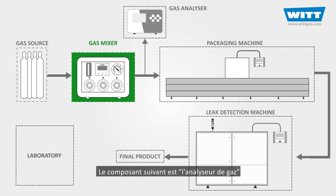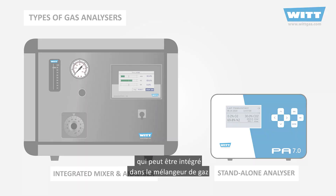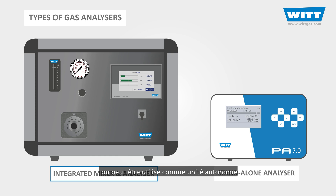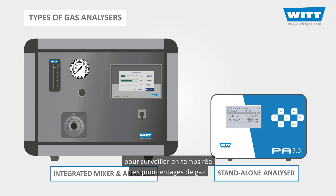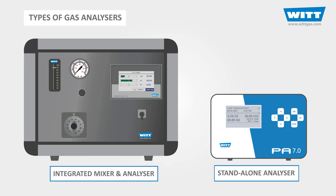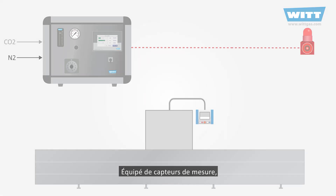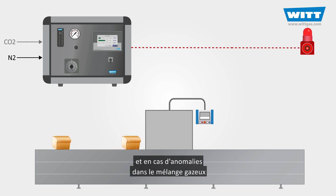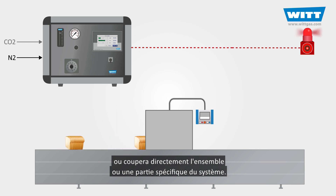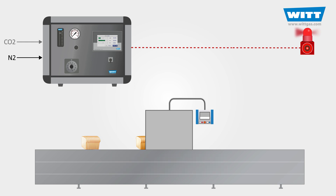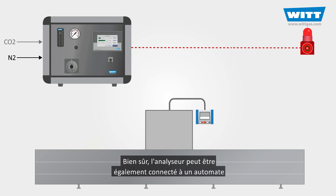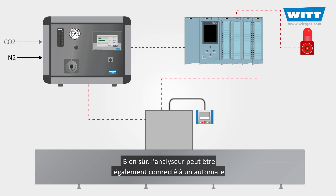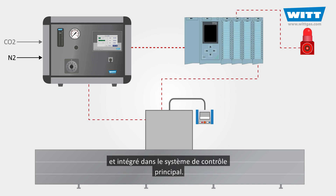The next component is the gas analyzer, which could be integrated into the gas mixer, or could be a standalone unit for monitoring the exact real-time percentages of the gases. Equipped with measurement sensors, the analyzer works in conjunction with the mixer, and in case of any anomalies in the gas mixture, it will inform the operator by activating an alarm, or will directly shut down the whole or a specific part of the system. The analyzer can be connected to a PLC as well, and integrated into the main control system.